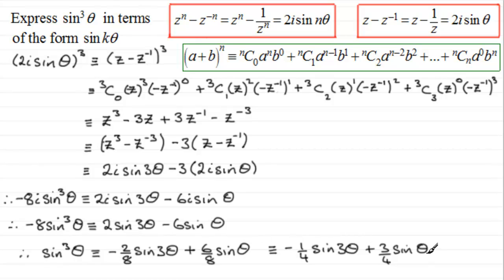So we've been able to express sine cubed theta in terms of multiple angles of the form sine k theta. This is the method we follow for powers of sine theta. For odd powers, you'll always end up with an i on both sides. We need to look at one more example where the power is an even number, and that follows in my next video.